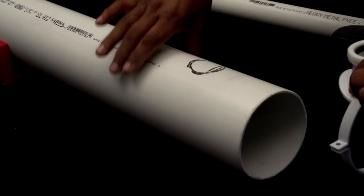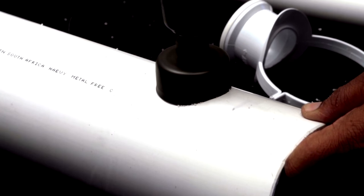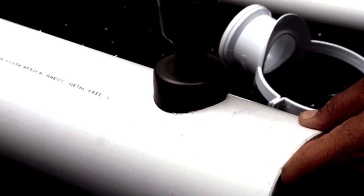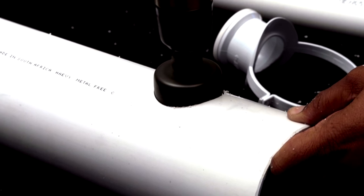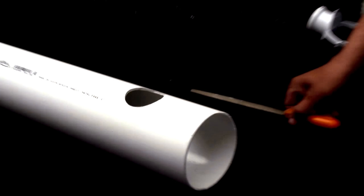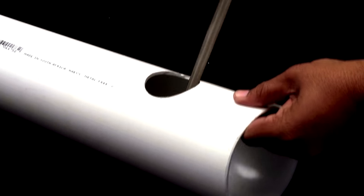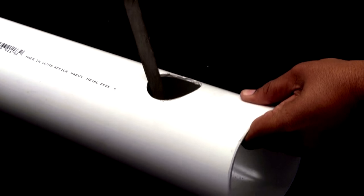Remove the saddle and drill the hole in the main line as marked using a 50mm hole saw. Re-fit the saddle and align properly, making sure that the flange lip fits inside the drilled hole.